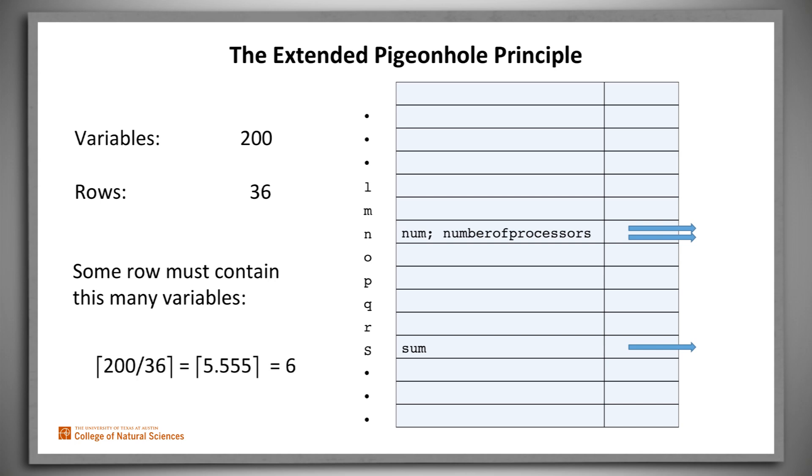Well, we take 200, divide by 36, we get 5.555. We take the ceiling of that, and we get 6. So we know we'll have at least 6 names in some box.